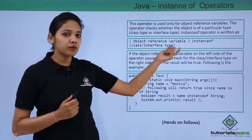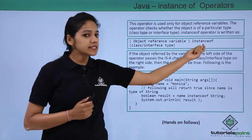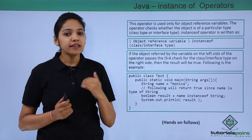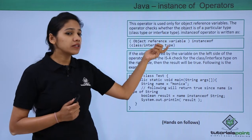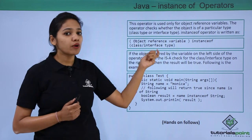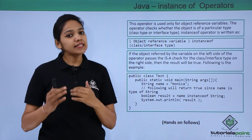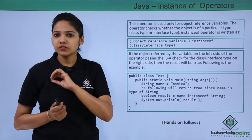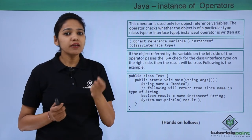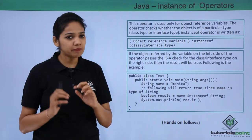Let us understand in detail with the help of its syntax. We write: object reference variable instanceof a class or an interface type. It checks whether a particular object variable you have created is of that particular data type, class, or interface type. For example, if you have a string variable named 'name' holding a value like 'Monica', you write: String name = "Monica".